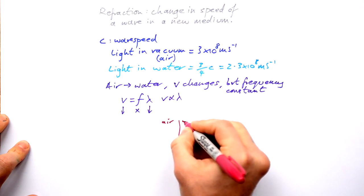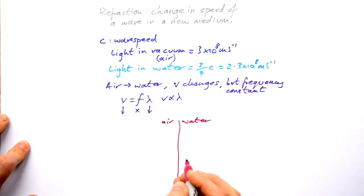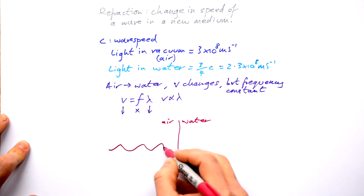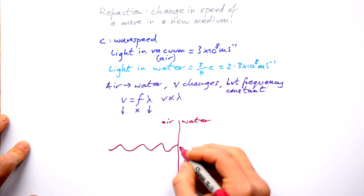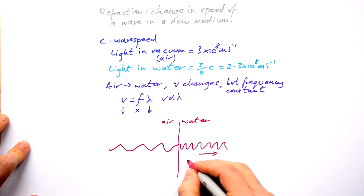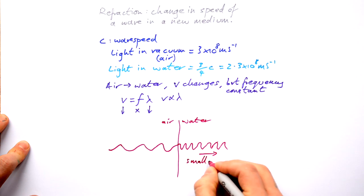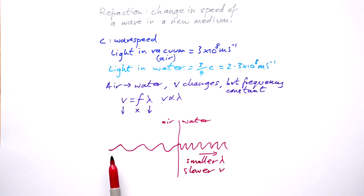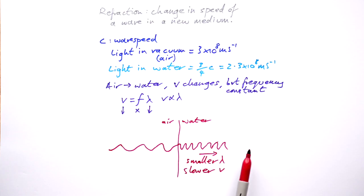Here's our air, here's our water, here's our boundary in between. Light comes in and as it hits the water the waves start to bunch up. As it goes that way: smaller wavelength, slower velocity. If the light comes head-on — that is, 90 degrees to the boundary — the wave will just carry on going in a straight line. The wavelength gets smaller and it goes slower as well.